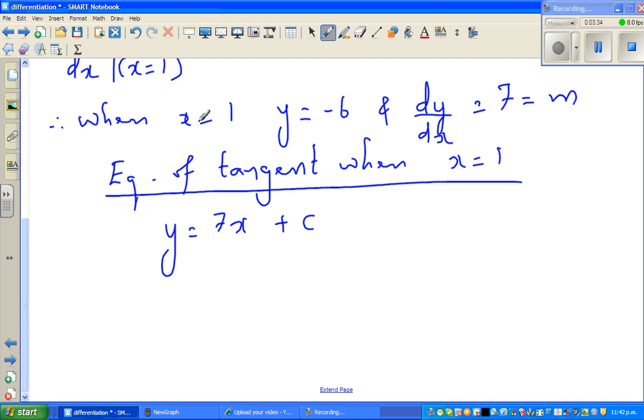So we know when x is 1, y is negative 6. So you can put negative 6 in place of y. So negative 6 equals 7 times 1 plus c. So negative 6 is 7 plus c. And if you take away 7 from both sides, this implies c is negative 13.